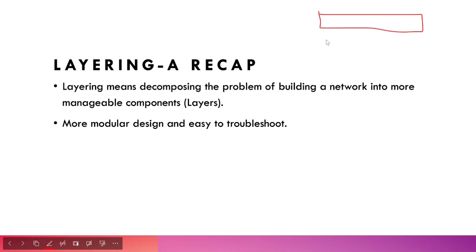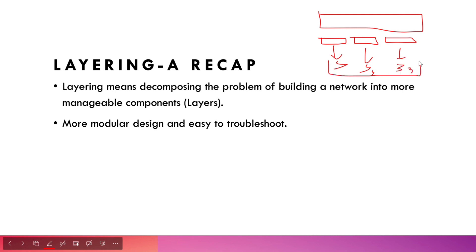The big problem is divided into sub-problems. Each sub-problem is sorted out individually, and a solution is found for each. Then those individual sub-problem solutions are aggregated to form the solution to the overall big problem. So layering means dividing a problem into layers — each layer handles its own individual problem and provides a solution, and those solutions are combined.